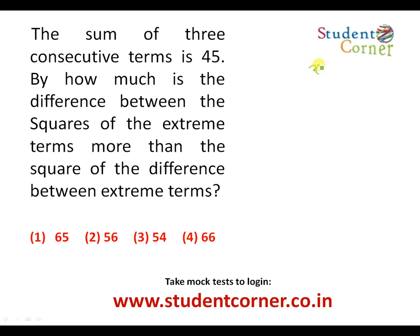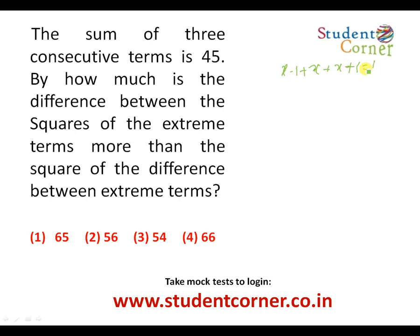We assume them as x-1, x, and x+1 to make the solution simpler. Their sum equals 45. The -1 and +1 cancel out, leaving 3x = 45, so x = 15.